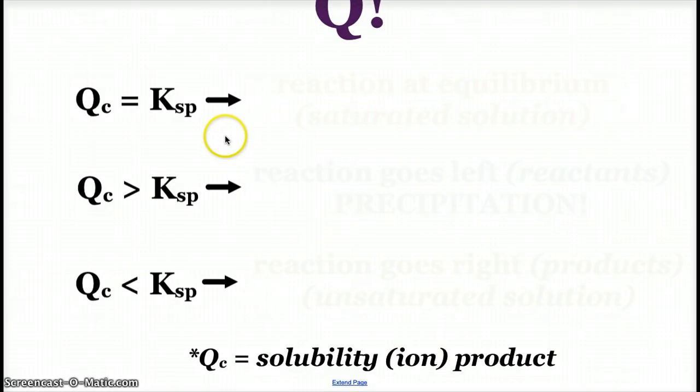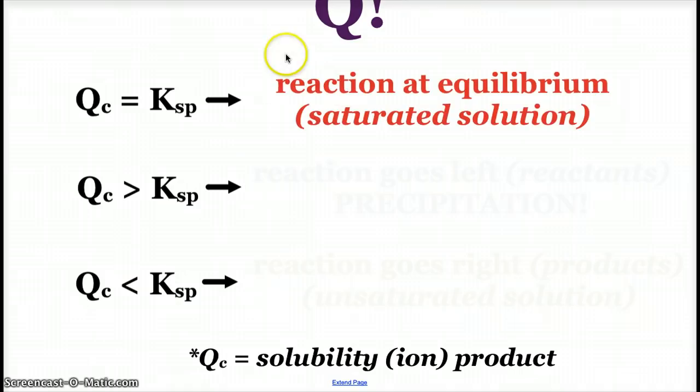If our Q is equal to KSP, then the reaction is at equilibrium. And that's, we would have a saturated solution. If our Q value is greater than KSP, that means we have a lot of ions present in solution.